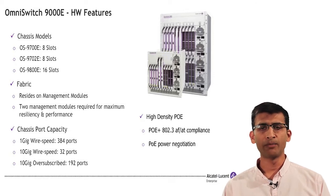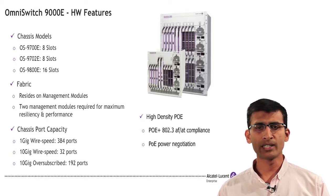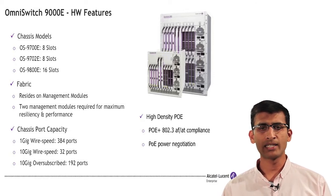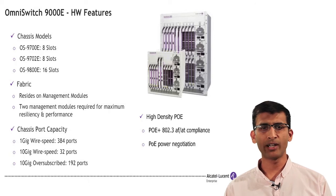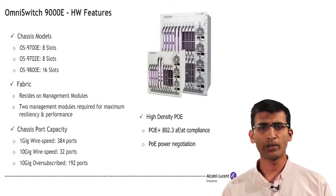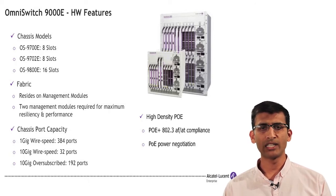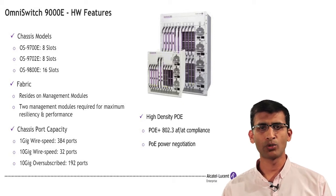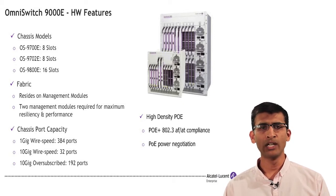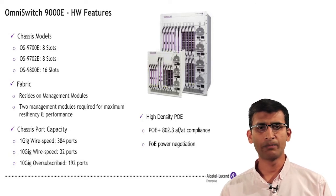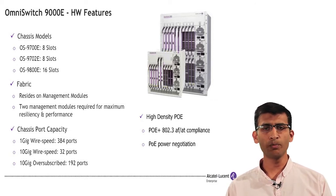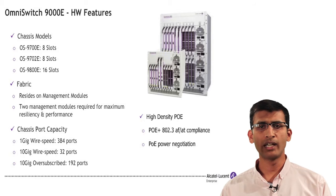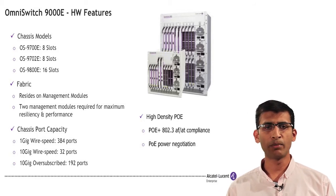All the hardware components — the CMMs, fan trays, power supplies, and network interface cards — are front accessible for operational ease. The 9000E chassis supports a high density of 1 gig and 10 gig ports, up to 384 1 gig ports and 192 10 gig ports on a single chassis. The POE line card supports 30 watts on all ports with 802.3 AF and AT compliance.